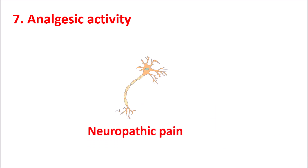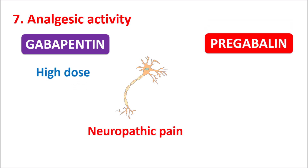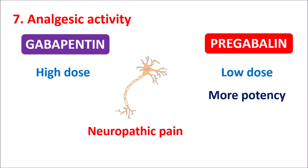The seventh point is analgesic activity. In the treatment of neuropathic pain, which drug shows more analgesic activity? Gabapentin must be used at a high dose, whereas Pregabalin is used at a low dose due to its greater potency. Because of this higher potency, Pregabalin can show more analgesic activity even at a low dose compared with Gabapentin.